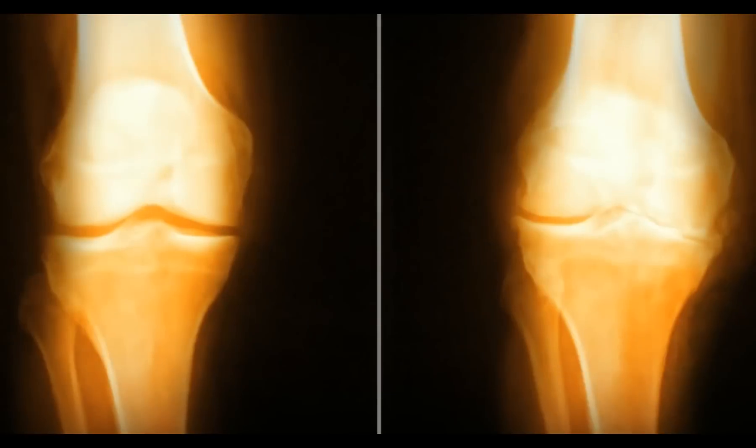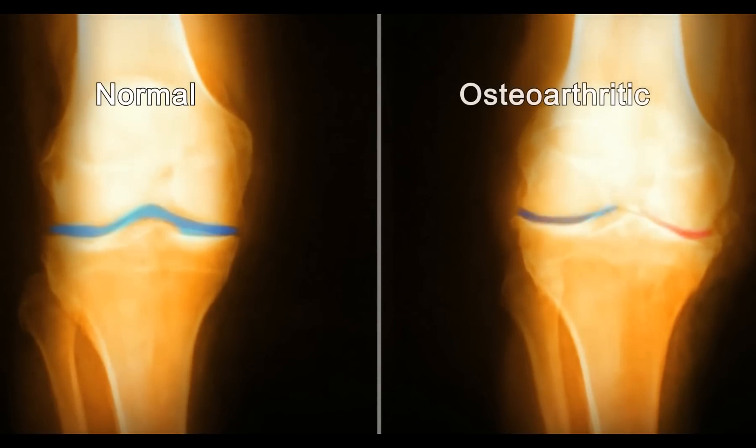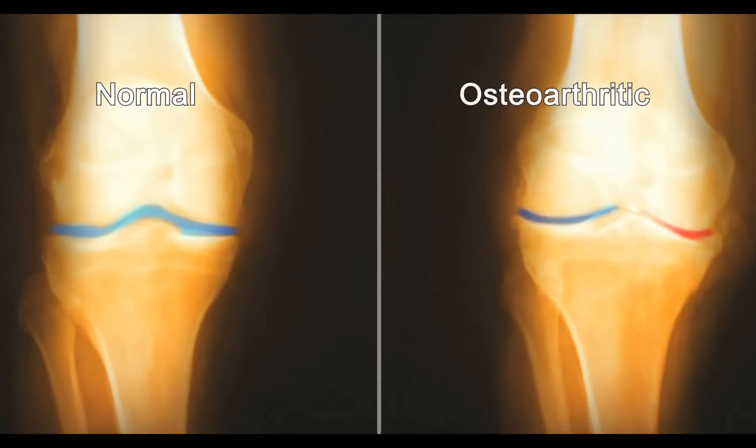These x-rays show the joint space in a normal knee, compared to the narrow space in an osteoarthritic knee.